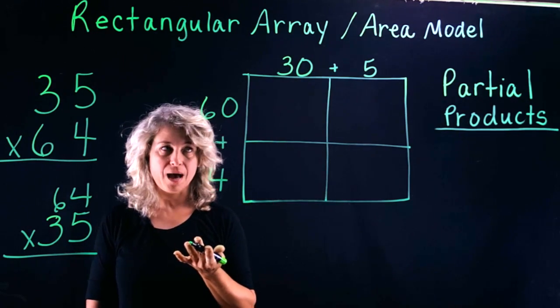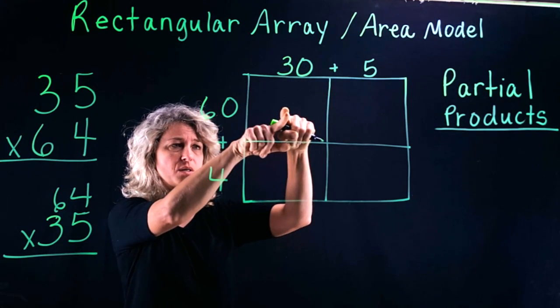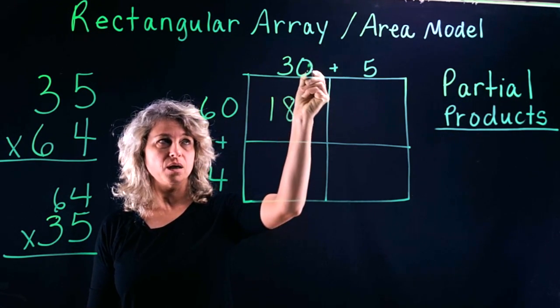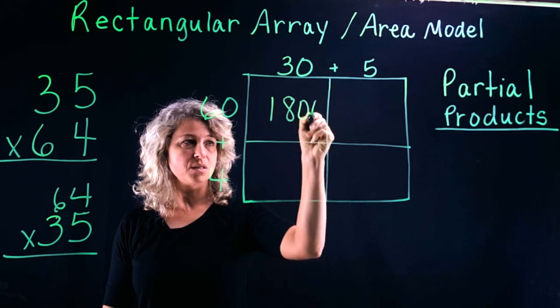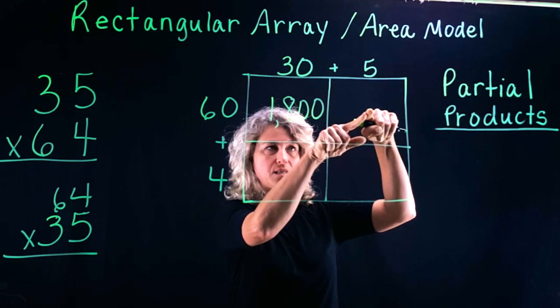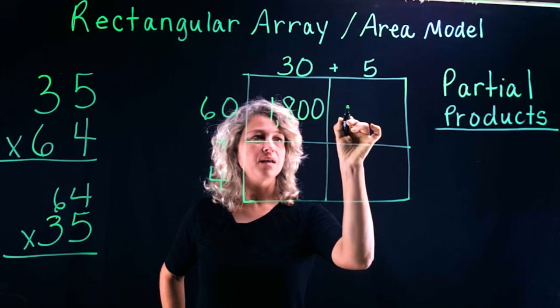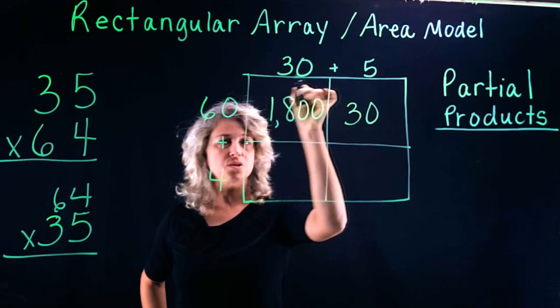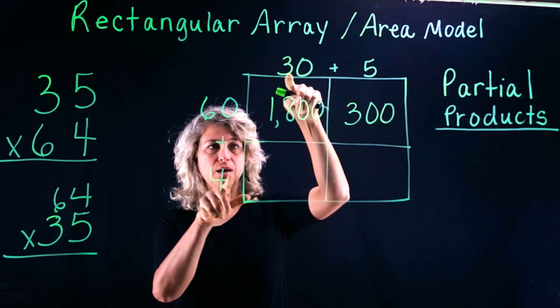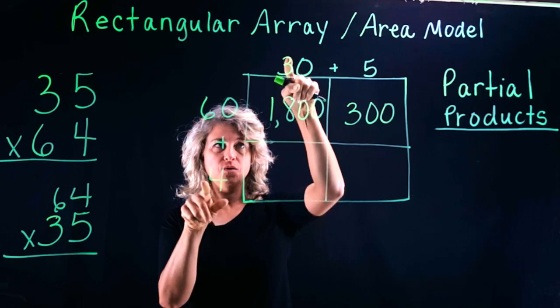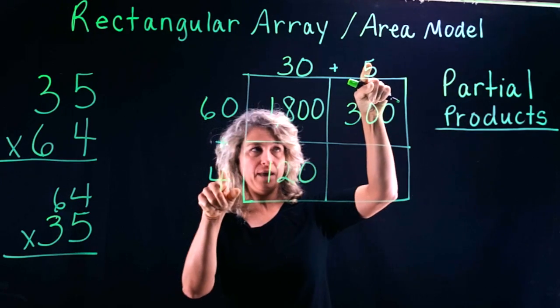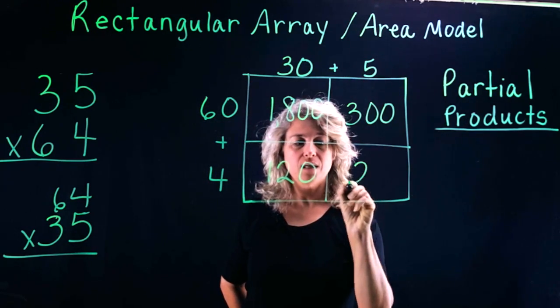So when we have it set up correctly, watch how we multiply. We will take the top two numbers and multiply 6 times 3, which is 18. Be careful, count your zeros: one, two. Add your zeros right here. Then multiply 60 times 5: 6 times 5 is 30, count your zeros, there's only one, so add one zero. Come down and we're going to multiply 4 times 30: 4 times 3 is 12, one zero to add. And the final box: 4 times 5 is 20.